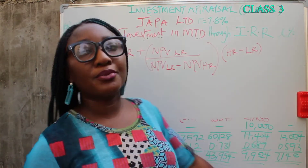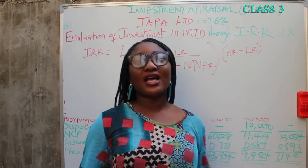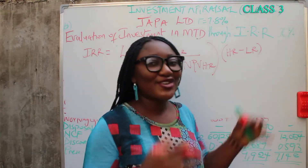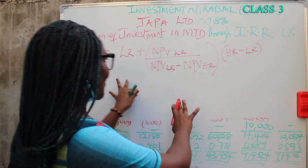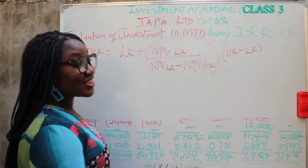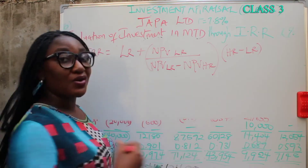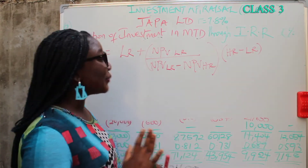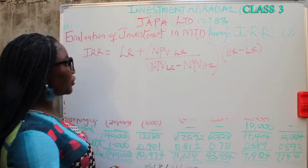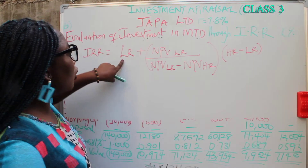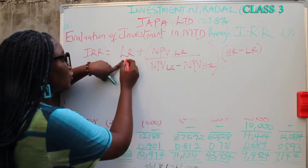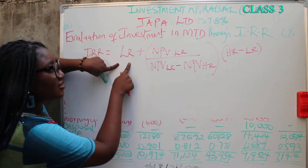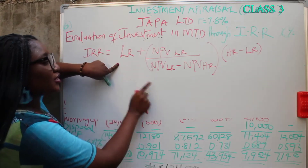For people who have watched my cost of debt or bond valuation class, we already know this formula. Your lower rate — look for it. NPV associated with the lower rate — look for it. NPV associated with the higher rate — look for it. Higher rate and lower rate — look for them.